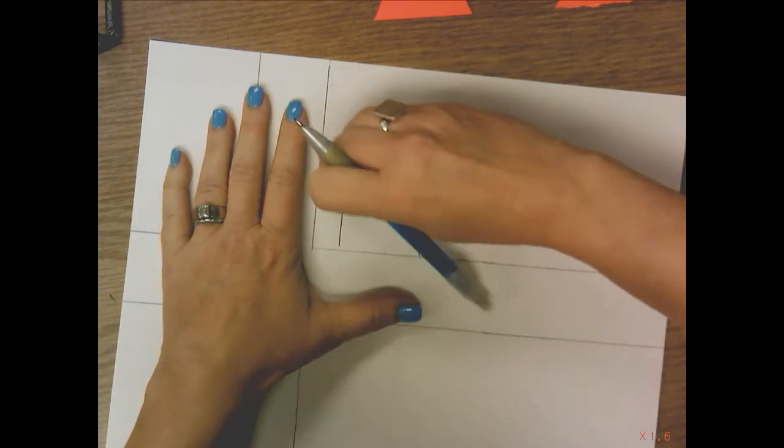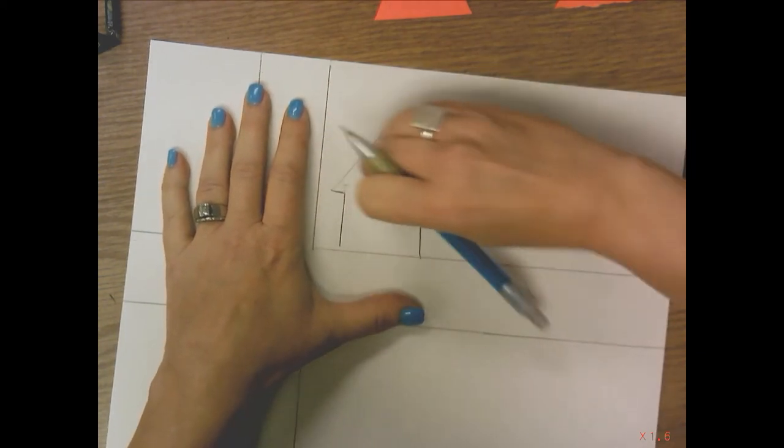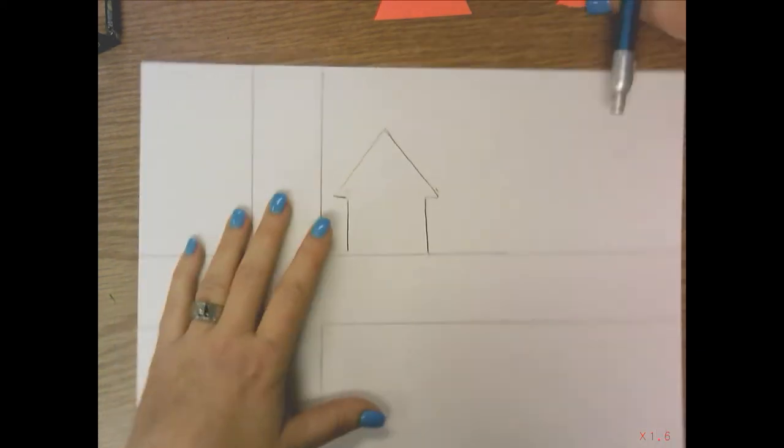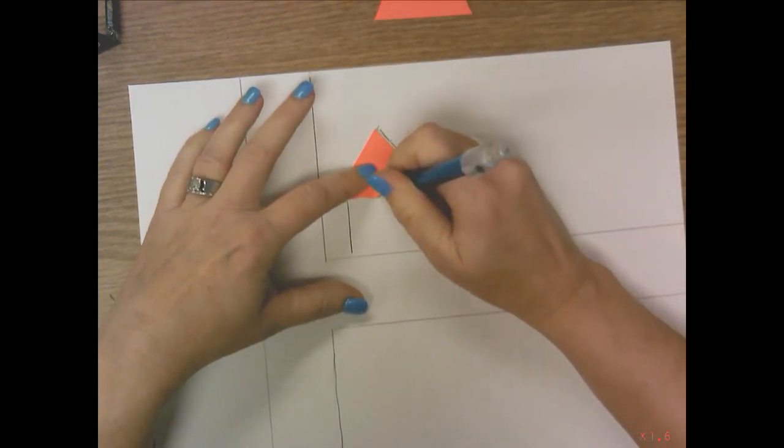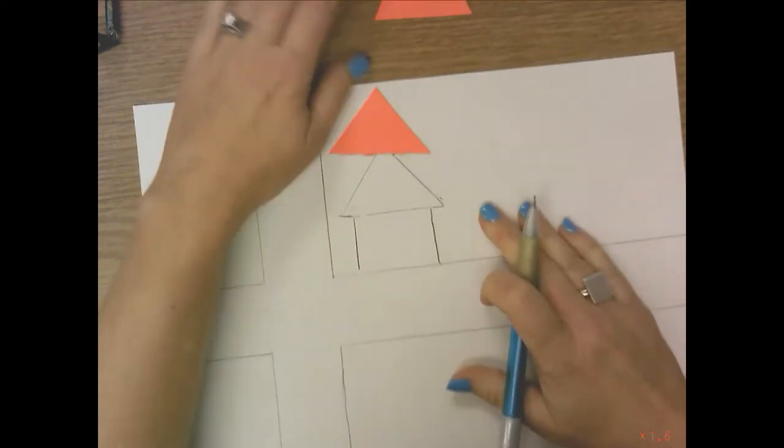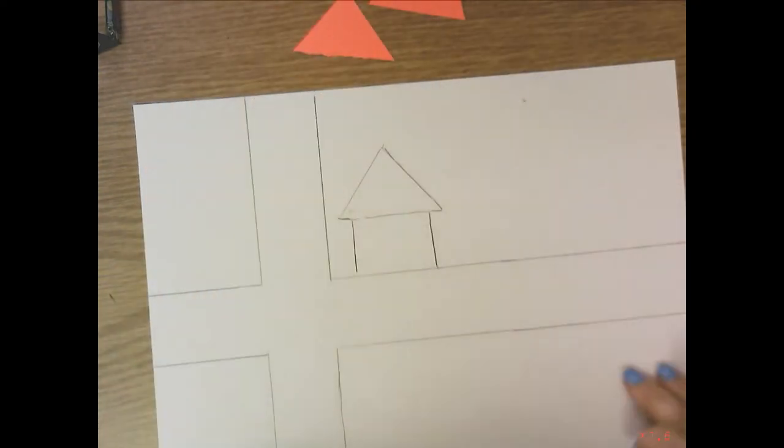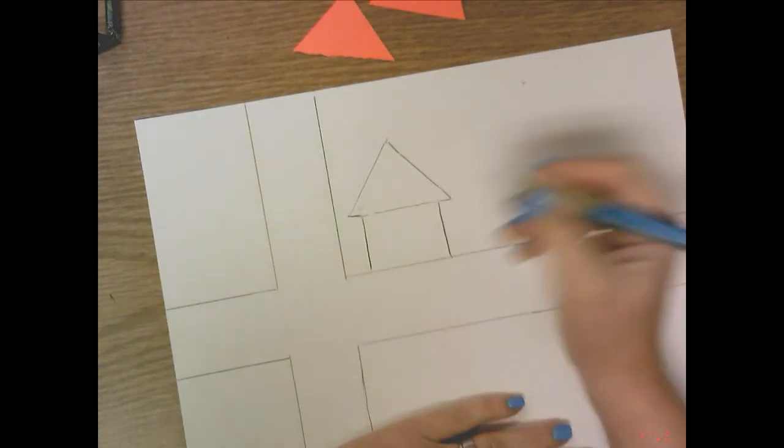I don't like this line here so I'm going to erase that line and I'm going to draw that line with the triangle. I like that better. Okay, this is going to be a house.